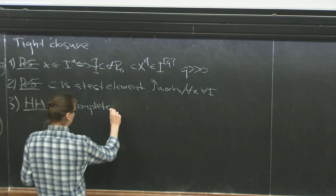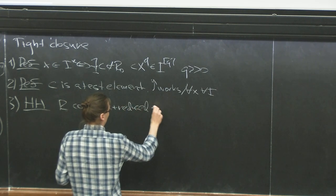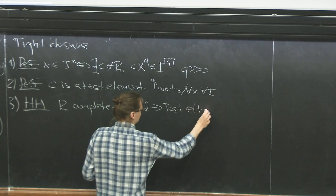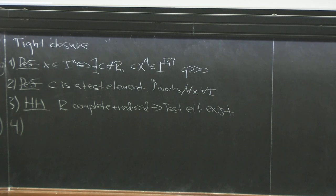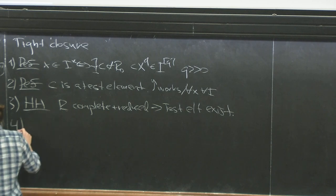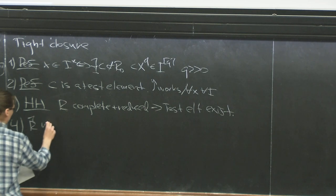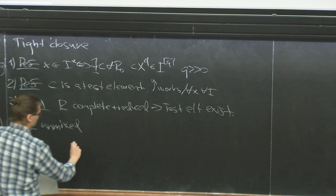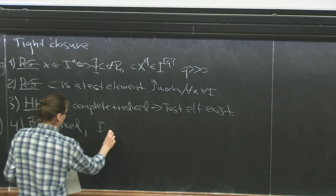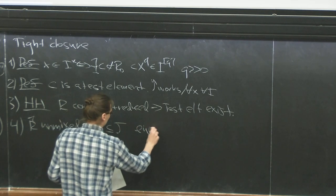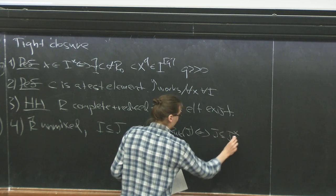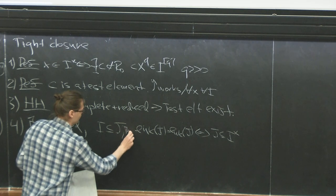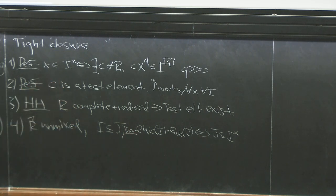I will need the result of Hochster and Huneke, which gives the existence of test elements if r is complete — for me it suffices that r is complete and reduced, then a test element exists. Also, under the formally unmixed assumption of the Watanabe-Yoshida theorem, there is a tight connection: if i ⊆ j, then Hilbert-Kunz multiplicity of i equals Hilbert-Kunz multiplicity of j if and only if j is contained in the tight closure of i.